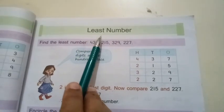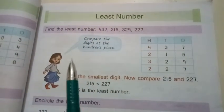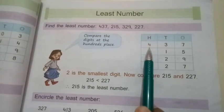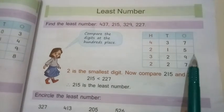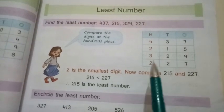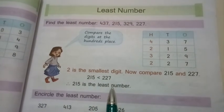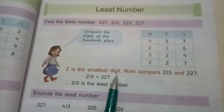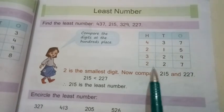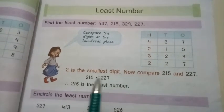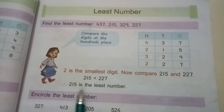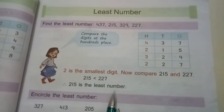Next is least number. The same way, we compare the hundreds place. The given numbers are 437, 215, 329, and 227. We have to find out the smallest number. 2 is the smallest digit. Now compare 215 and 227. 215 is less than 227. Therefore, 215 is the least number.